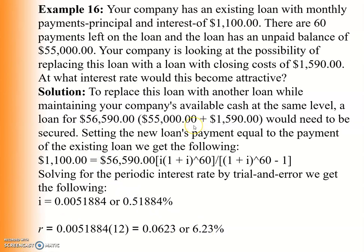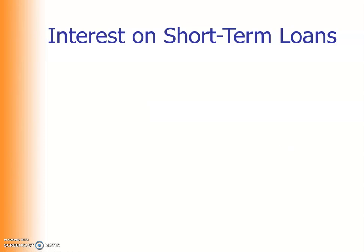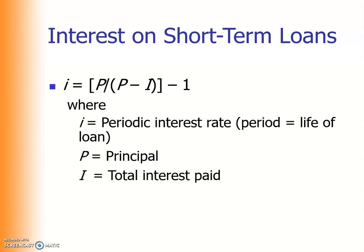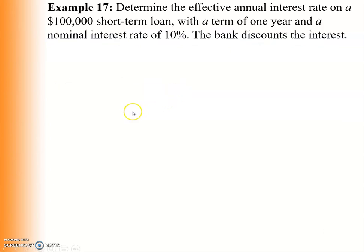Those were examples for short-term loans. For short-term loans, interest is generally calculated differently than for long-term loans. Discounting the interest rate increases the effective interest rate by decreasing the amount of principal available to the borrower and requiring interest to be paid at the beginning of the loan. The effective interest rate formula is: i_eff = P / (P - total interest paid) - 1.